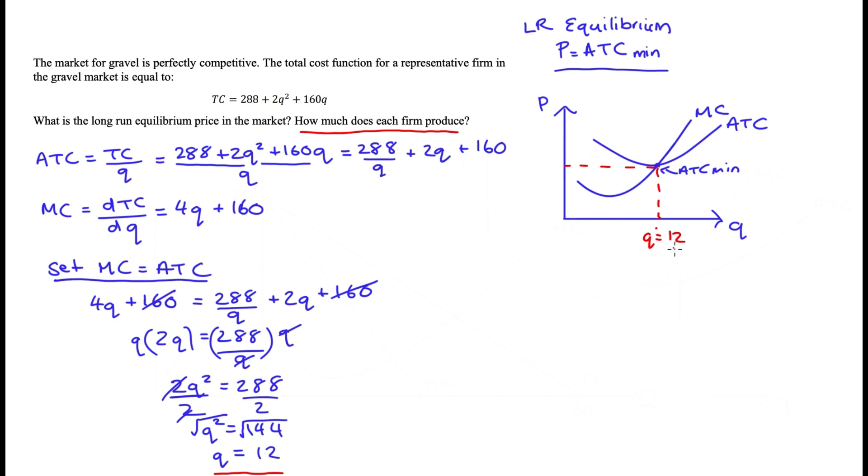that by setting the quantity equal to 12 in either our marginal cost or our average total cost functions. I usually just write it out like this: the price is equal to marginal cost—that's an outcome of perfect competition—which is equal to 4q. Our q is 12, we just found that, plus 160. 4 times 12 is 48 plus 160; we get 208. So that's going to be the price where it's equal to average total cost min, and that's really the second part of the question.